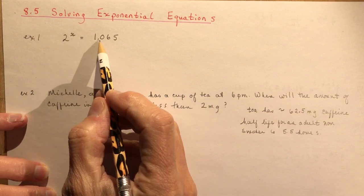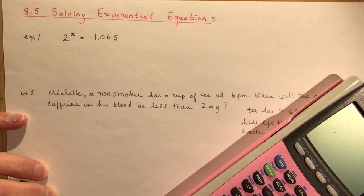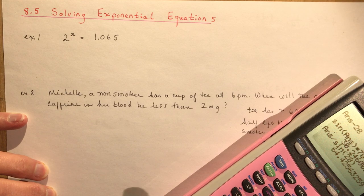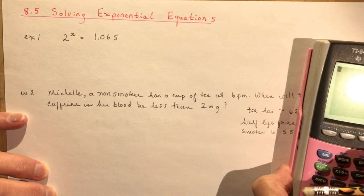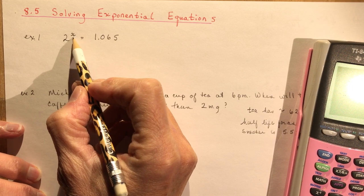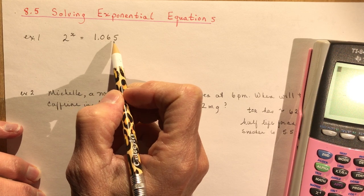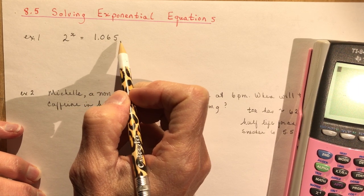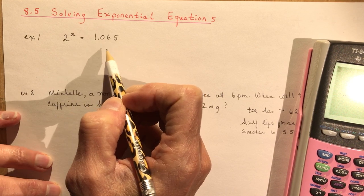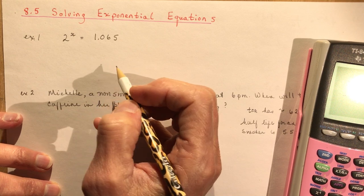We have 2 to the x equals 1.065. You probably did some of these last year in grade 11. Maybe your teacher showed you a trick — you could use trial and error, plugging in numbers for x to see when you get close to 1.065, or the easiest way is to take the log of both sides. Remember, when you take the log it's log base 10, which is what your calculator can evaluate.